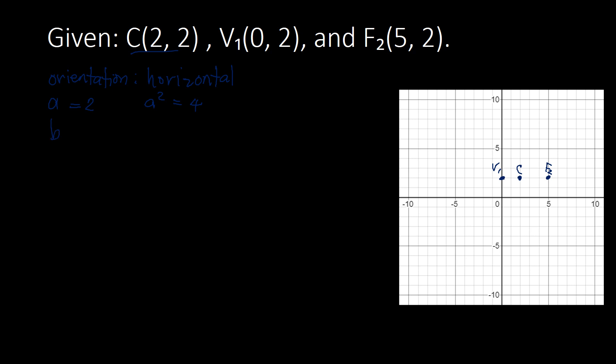We cannot look for B right away from the given information, but we can use C since we are given the focus. C is the distance from the center to a focus. Counting from the center to the focus, we get 3 units, so C equals 3, and C squared equals 9.